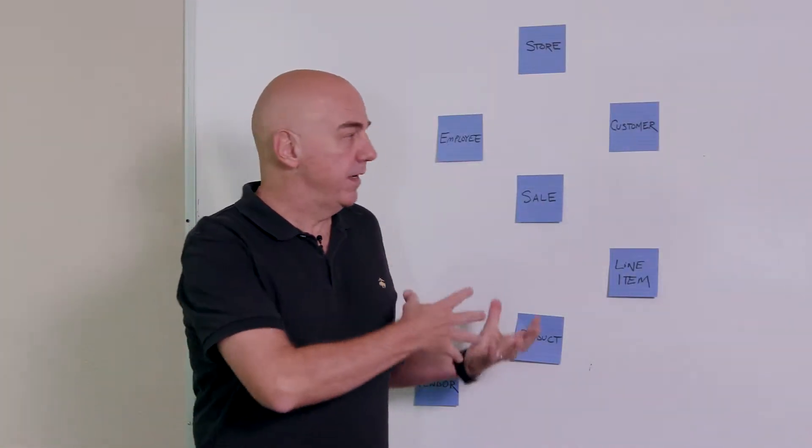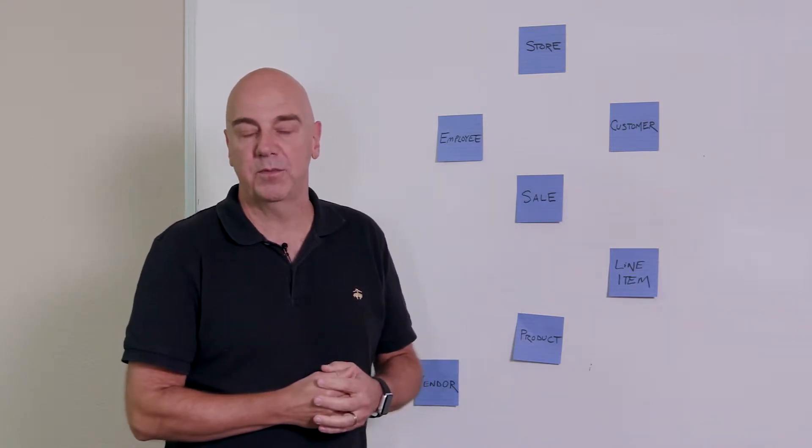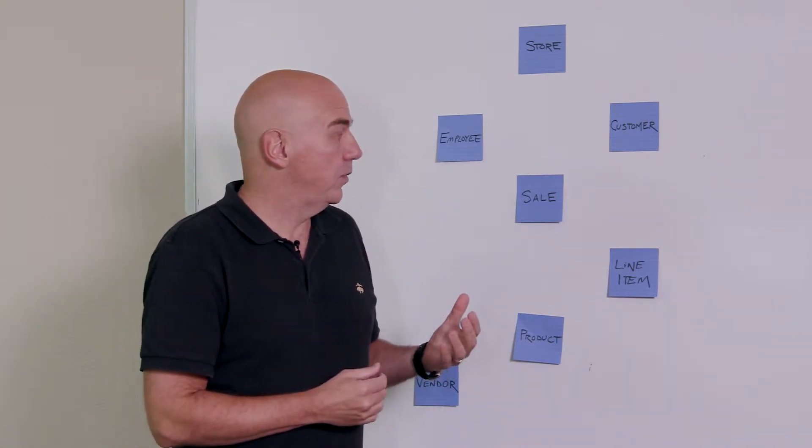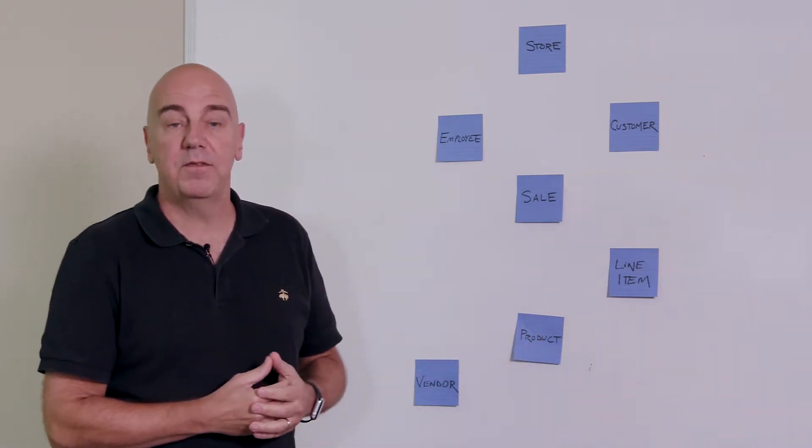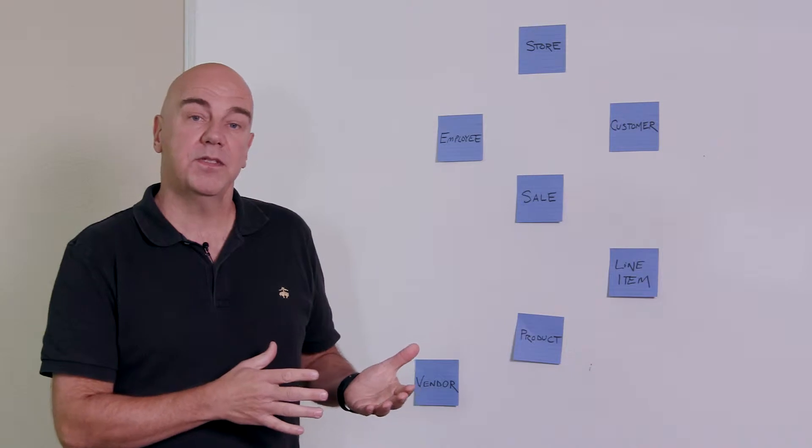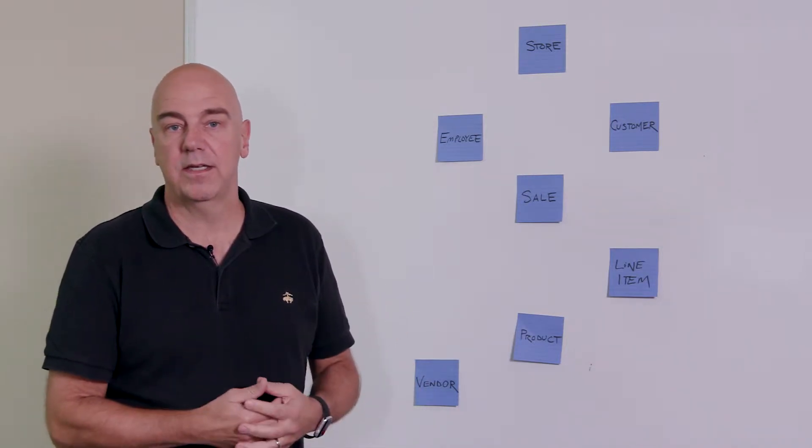Okay, so we rearranged this just a little bit on the board, but these are the same concepts we had from the first lesson here. So we identified the core business concepts, and now what we're looking to do is to identify the unique, specific, natural business relationships between these concepts.